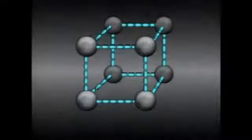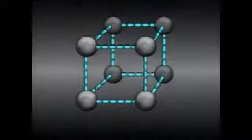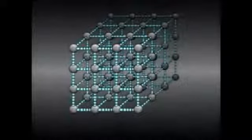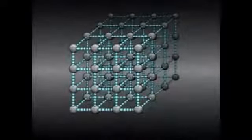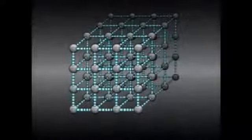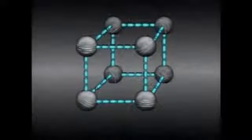The attraction of the molecules holds them together and gives a solid its rigidity and firmness. This crystal represents common table salt — each sphere is one molecule of salt. If more salt molecules are added, they combine along the edges of the cubic structure, forming a larger salt crystal. The structures of solids range from simple to complex. The exact molecular structure of a solid determines many of its strength and hardness characteristics.